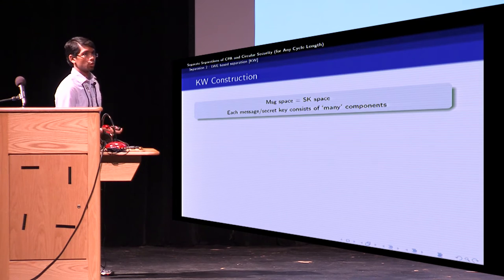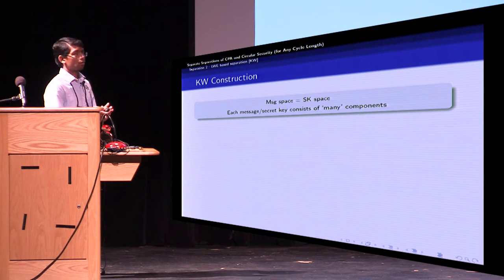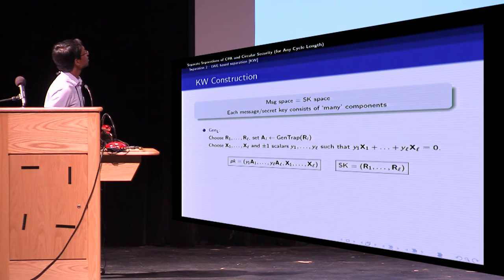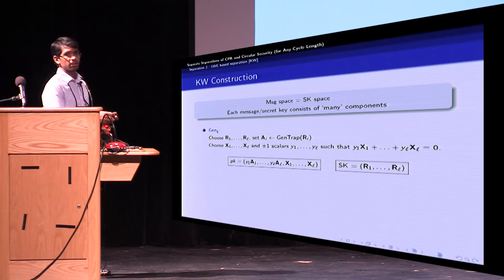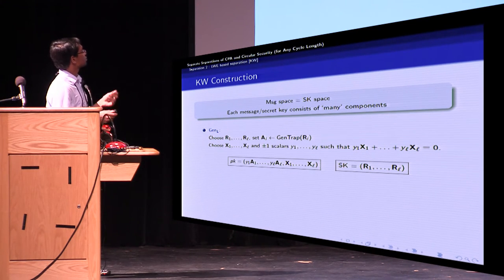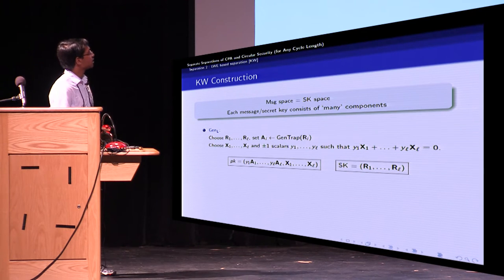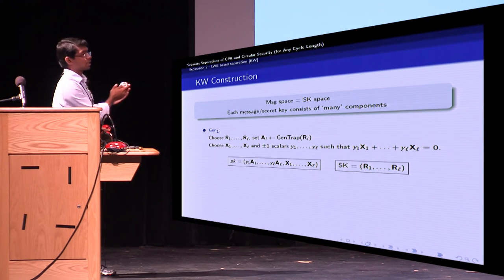So let's now look at the five algorithms. First, we'll look at the leader mode, which is very similar to the one-cycle separation that we've already seen. The key generation algorithm chooses a bunch of matrices using the GenTrap algorithm. And then it chooses the X_i matrices, these Y_i scalars, and constructs the public key as shown.